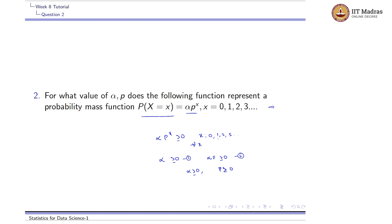There is one more condition: the sum of all probabilities for x equals 0, 1, 2, and so on to infinity should be equal to 1. That is, sigma from x equals 0 to infinity of p(X=x) should equal 1. Substituting the values, the expression becomes alpha plus alpha*p plus alpha*p^2 plus alpha*p^3 plus and so on to infinite terms, which should equal 1.